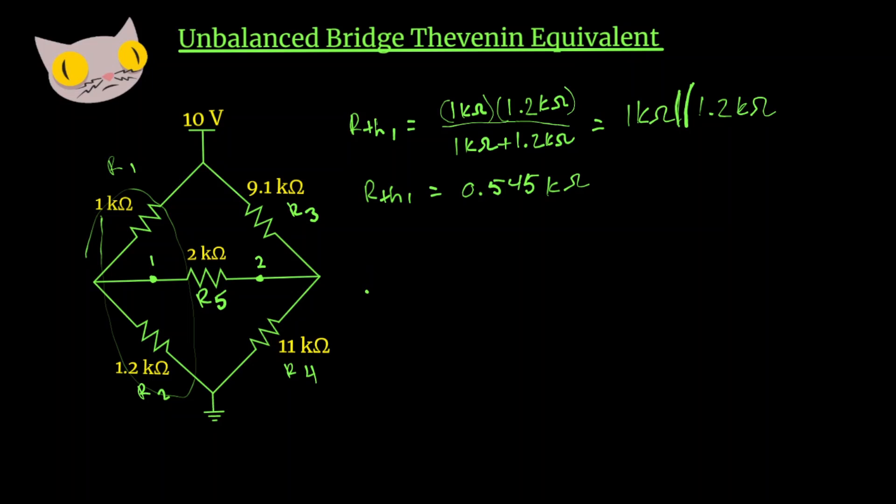Let's find the Thevenin voltage for the left side of the circuit now. So our Thevenin voltage, we'll call that Vth1, is going to be equal to 10 volts times R2 over R1 plus R2.